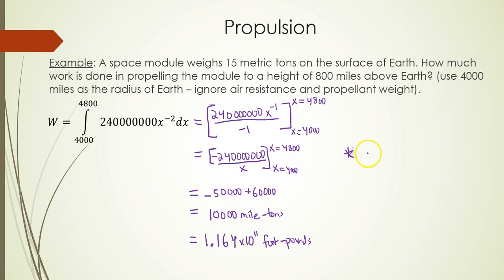If you want to convert it to joules, well, you know that 1 foot pound is equal to 1.35582 joules. So what this means is that when you convert 1.164 times 10 to the 11 foot pounds to joules, you actually get 1.578 times 10 to the 11 joules.